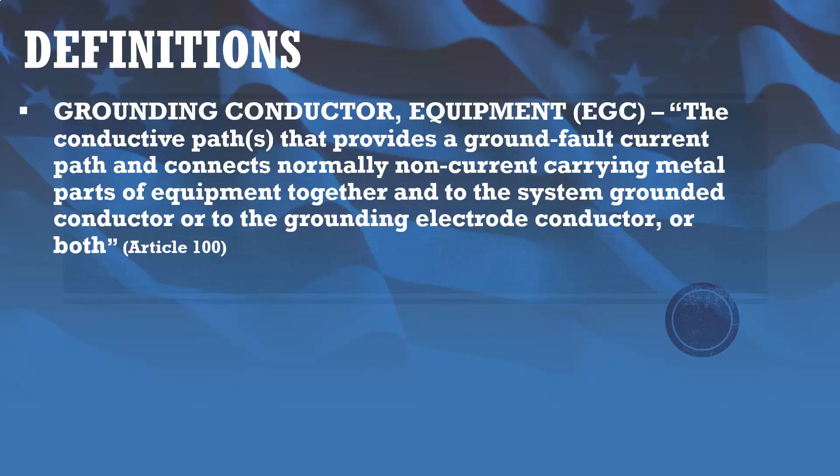For definitions, a grounding conductor equipment, or an equipment grounding conductor, is the conductive path or paths that provide a ground fault current path and connects normally non-current carrying metal parts of equipment together into the system grounded conductor or to the grounding electrode conductor, or both. Essentially, you can think of an equipment grounding conductor as the conductor connecting equipment or normally non-current carrying metal parts of different pieces of equipment to the grounding system.